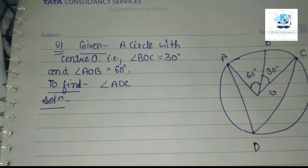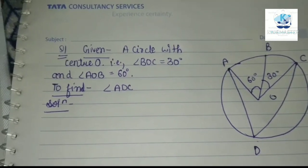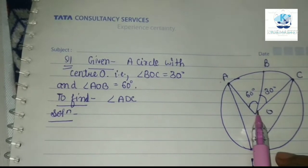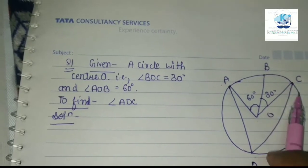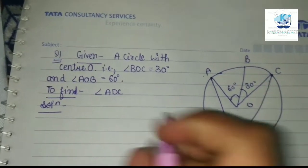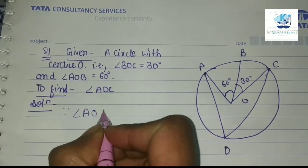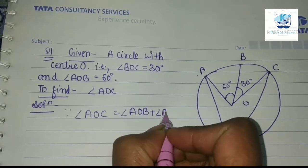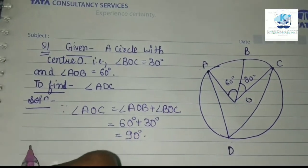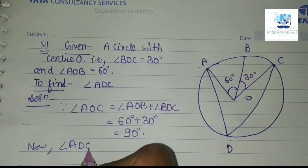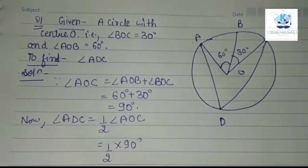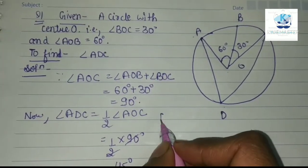We have a theorem: the angle at the center is double the angle at the remaining part of the circle. So angle AOC equals angle AOB plus angle BOC, which is 60 degrees plus 30 degrees equals 90 degrees. Now, angle ADC is half of angle AOC, which means half of 90 degrees, giving us 45 degrees.